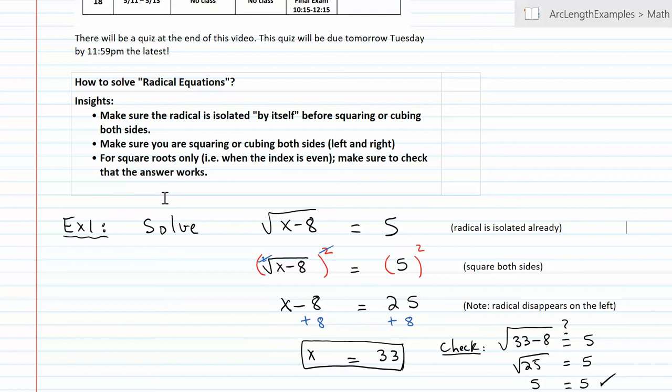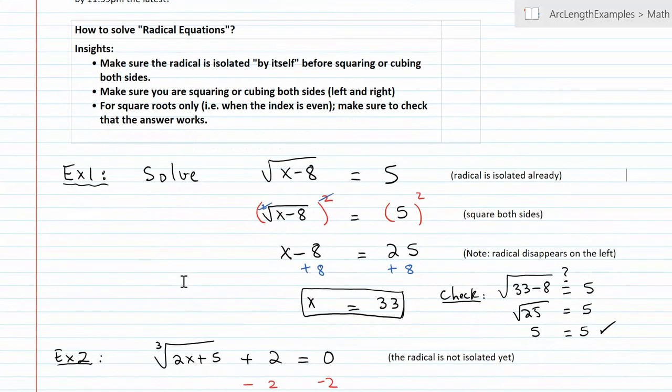Now, in the third bullet, this is another reminder that you have to make sure you check your answer at the end, provided the index is even. Well, since in this example, the index was 2, which is an even number, I need to make sure I check that 33 actually works. And when you do the check on the right side, it actually does work. So done.